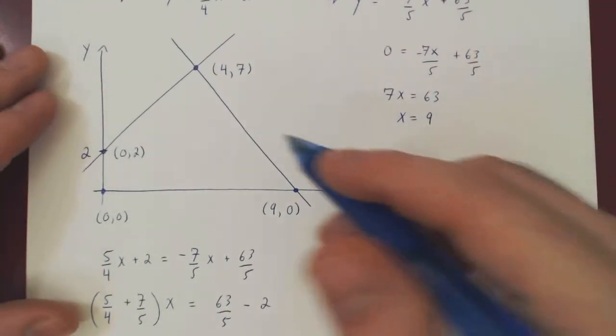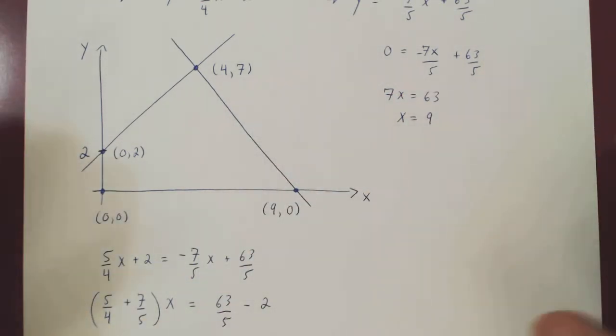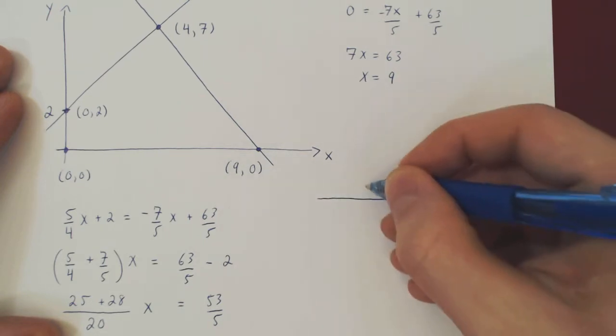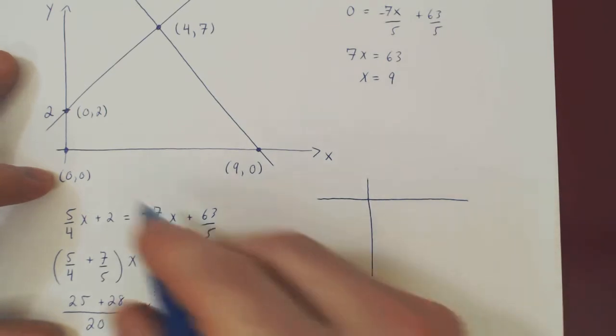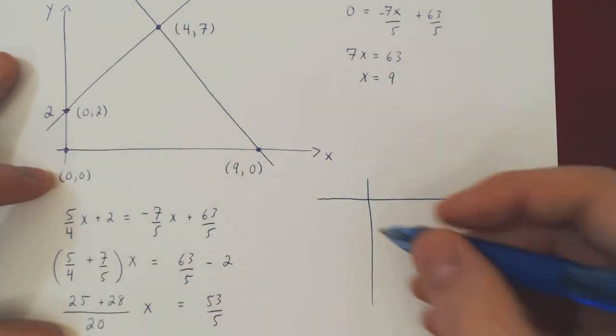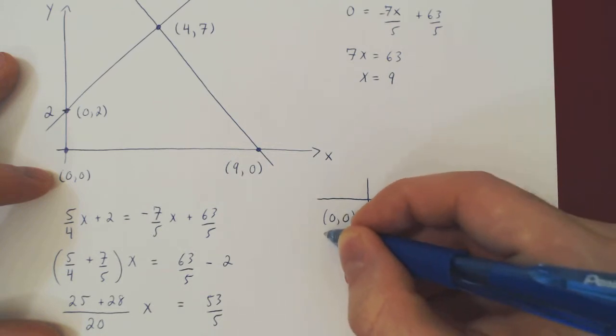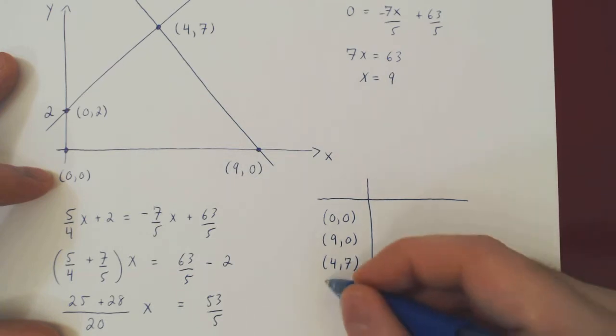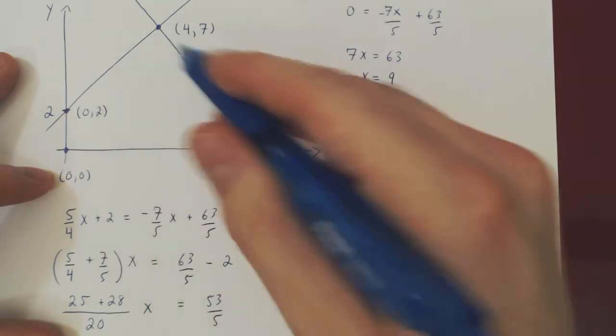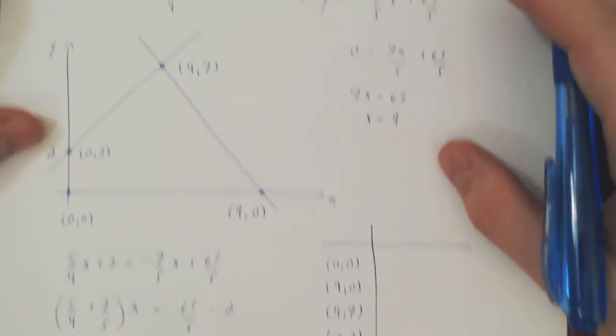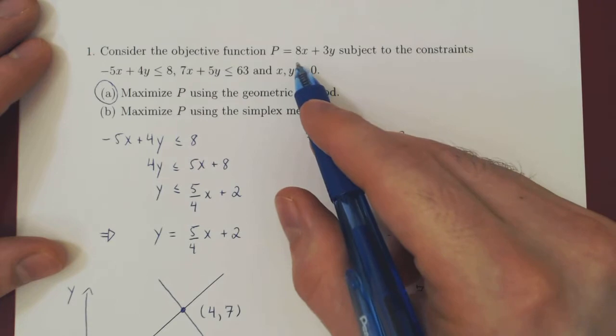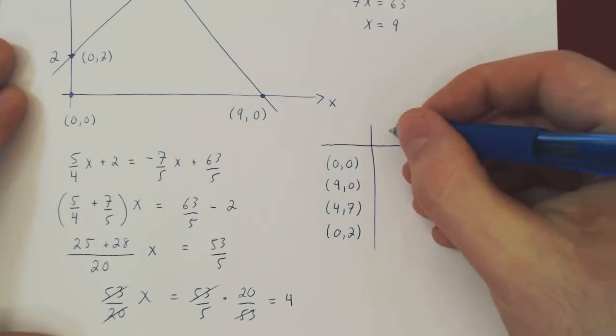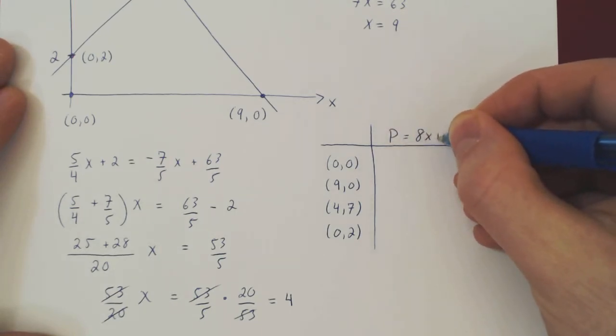So now we're almost done. We have our four vertices, we can create a table of values. So let's order them counterclockwise: we have the vertex 0,0, then 9,0, then 4,7, then 0,2. And we know that one of these vertices will yield the maximum value of P. The objective function was 8x plus 3y. So P equals 8x plus 3y.